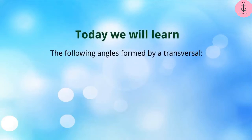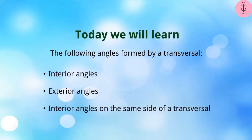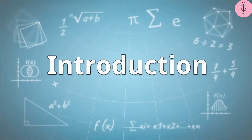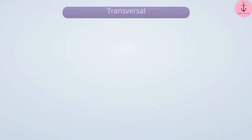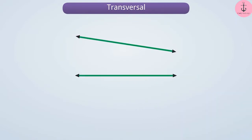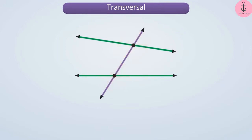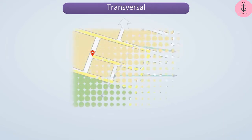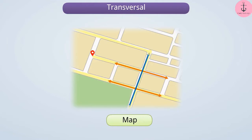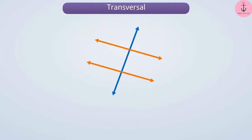Today we will learn about the angles formed by a transversal. In the previous video, we learned that a line that intersects two or more lines at different points is called a transversal — just like a road intersecting two other roads. When a transversal intersects two lines, a total of eight angles are formed.